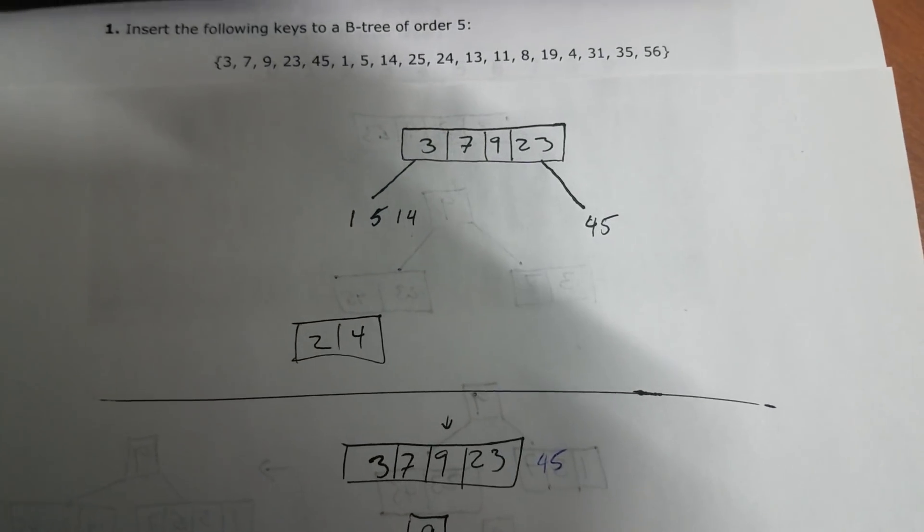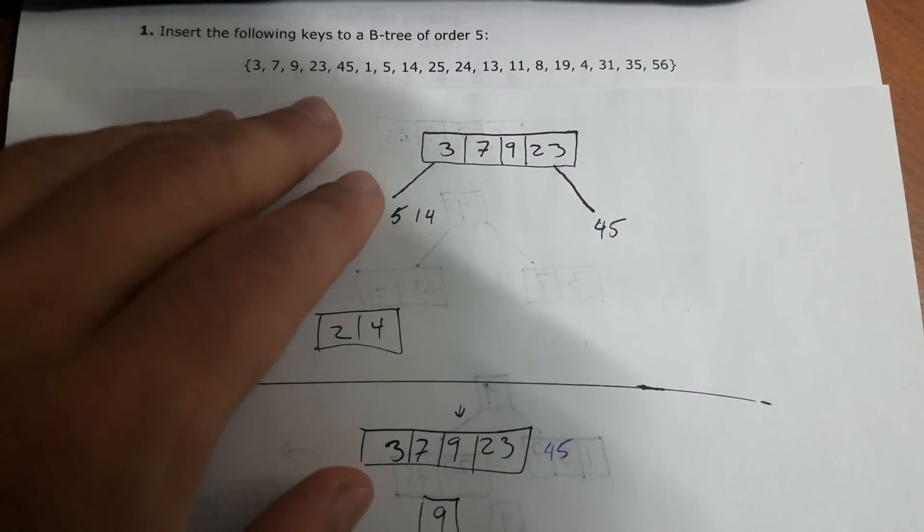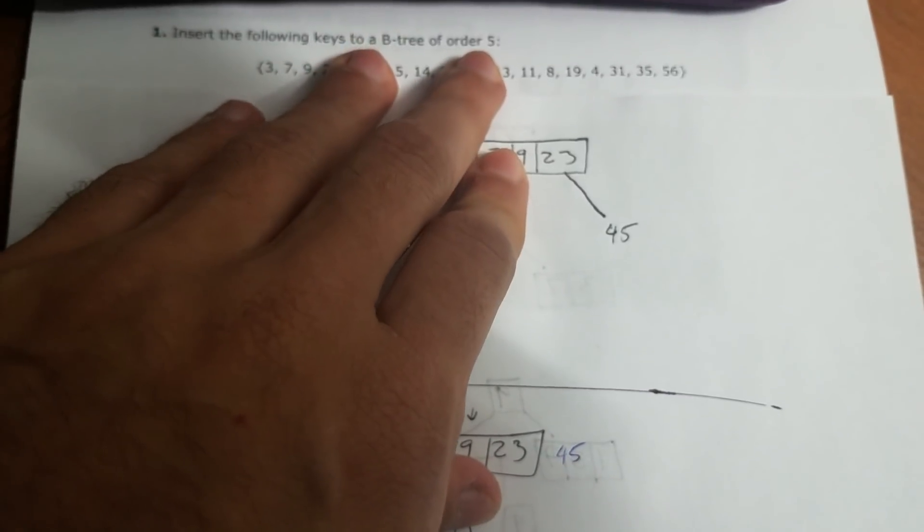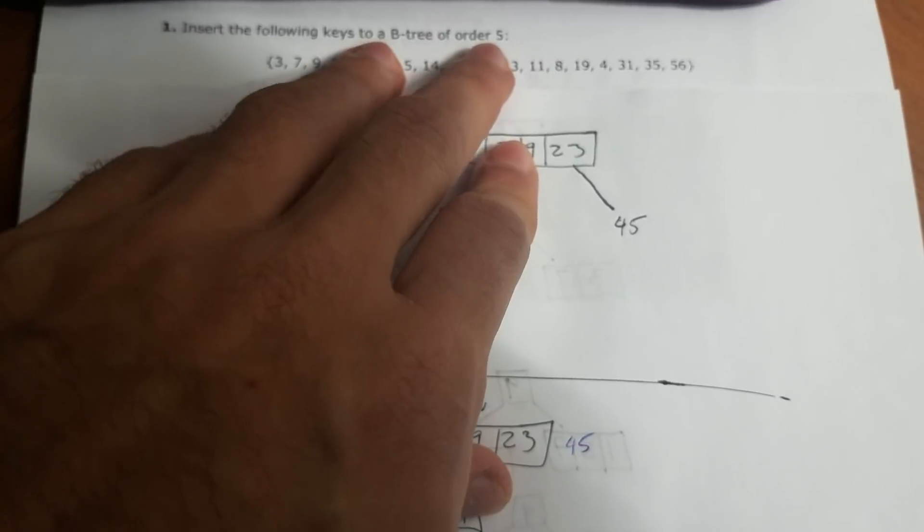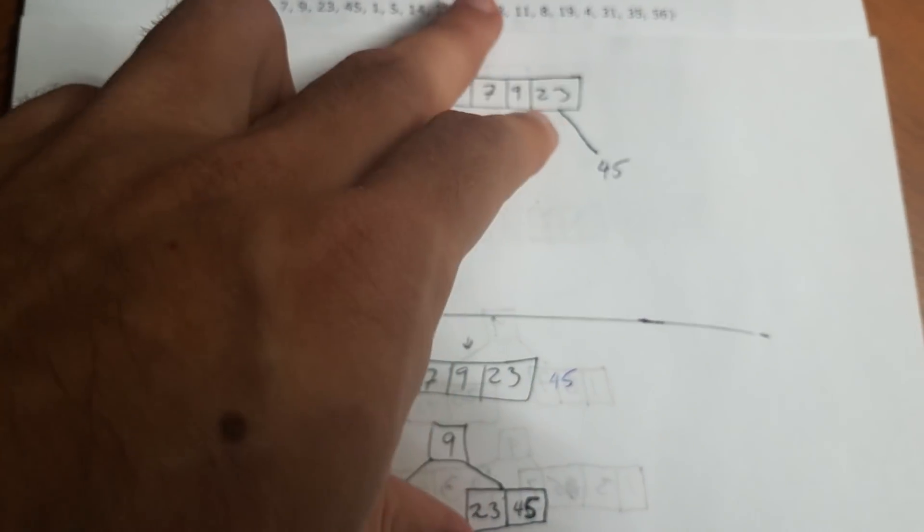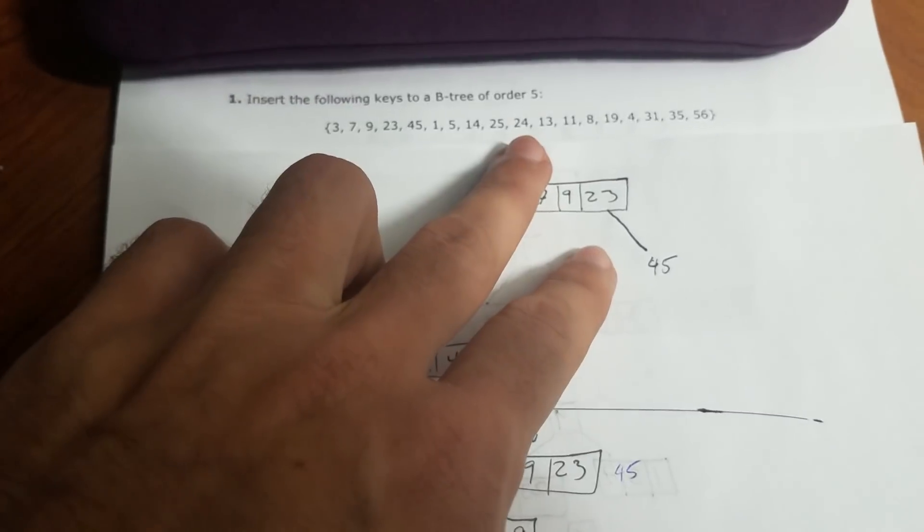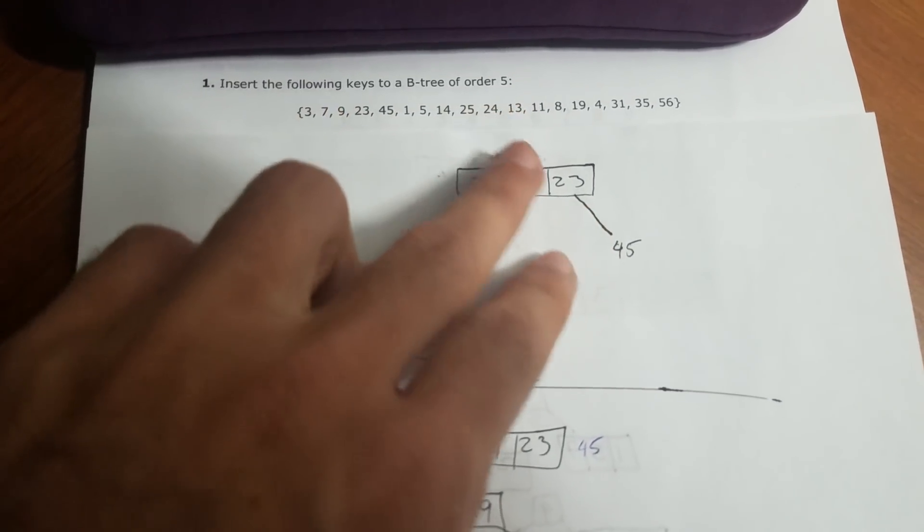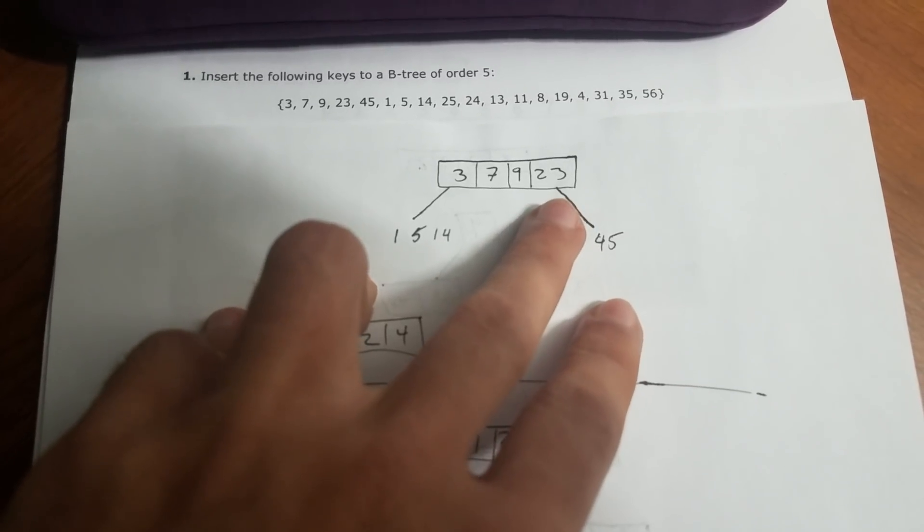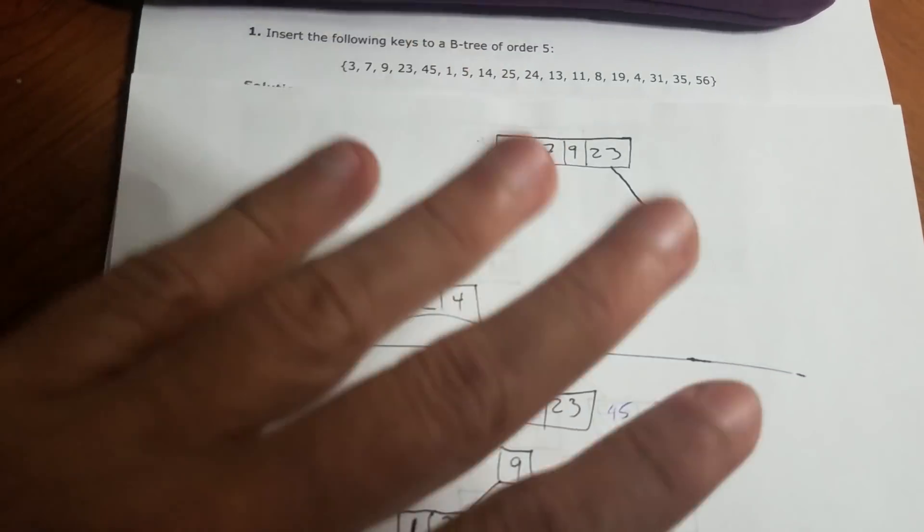So they tell us here to do a B-tree of order 5. These are the keys that we have. Now, it's order 5, so there is a rule that says the order of nodes is going to be m minus 1. Our m here is 5, so it's going to be 5 minus 1 is going to be 4. So the total number of the nodes is going to be 4. You cannot have more than 4.